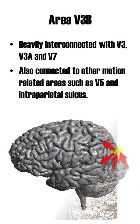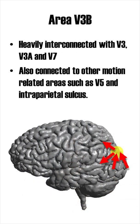Area V3b is heavily connected to the neighboring areas V3, V3a and V7, but it also sends information to other motion-related visual areas such as V5 and the intraparietal sulcus.